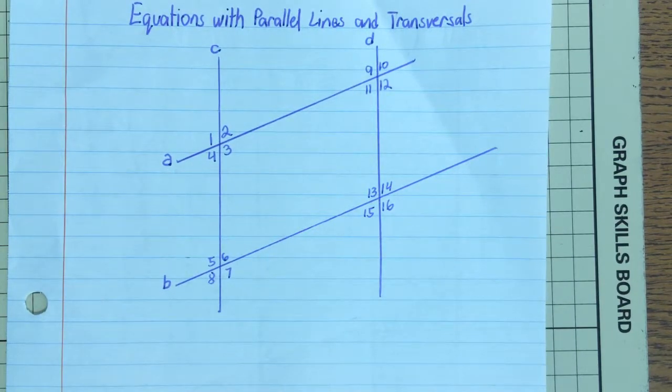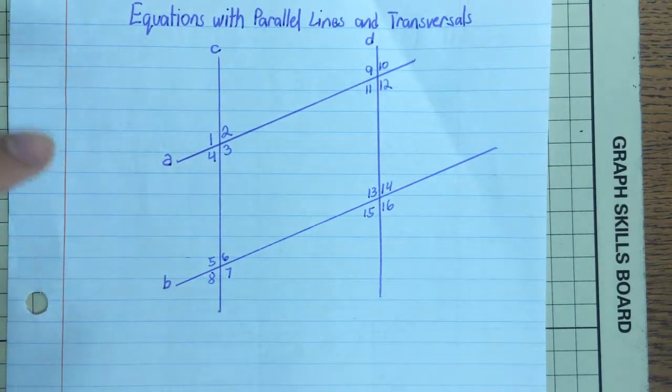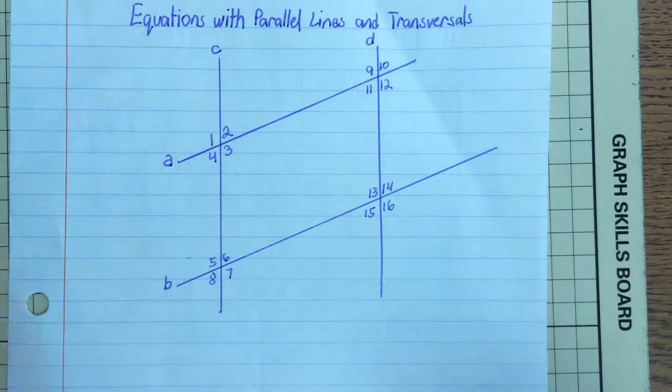Today we will talk about equations with parallel lines and transversals. First, what I have here are two pairs of parallel lines: a and b are parallel, and c and d are parallel.